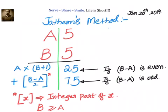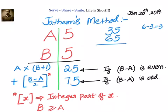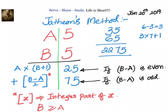Let us multiply 35 with 65. B minus A is 6 minus 3 which equals 3, an odd number, so the right-hand side will be 75. For the left-hand side: 3 into 6 plus 1 equals 3 into 7, plus integer part of 3 by 2 which is 1.5, so we take 1. That gives 21 plus 1 equals 22. The answer is 2275.